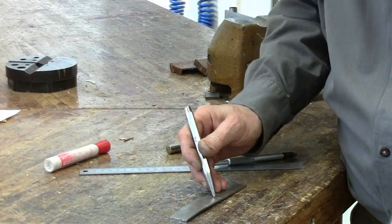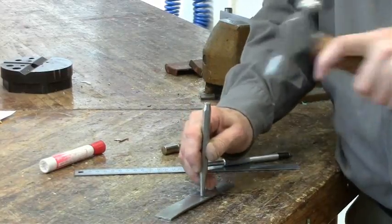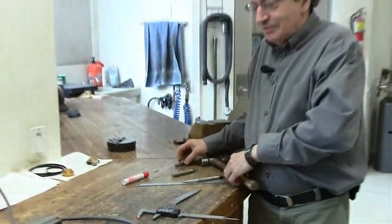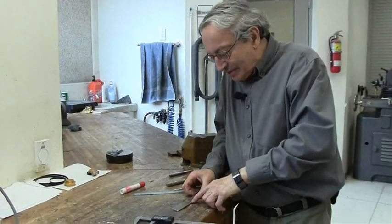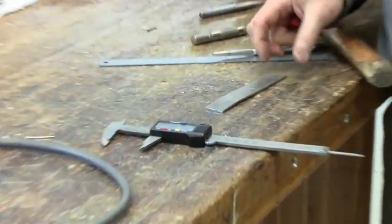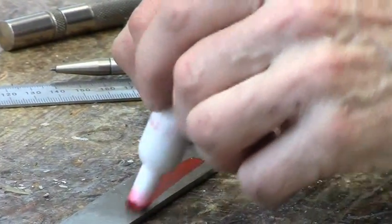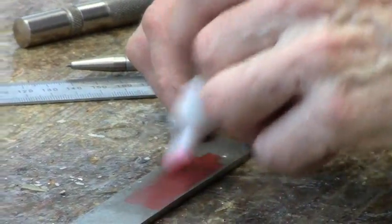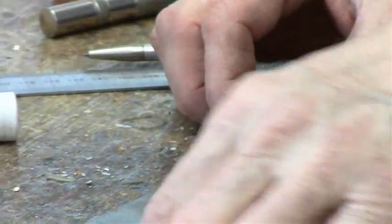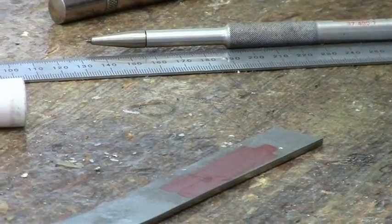Now sometimes if you don't see the lines well for orientation, what you can do is you can take erasable markers and just go over the area here. This is very convenient because if you go over the area you're working on with an erasable marker, you'll see the lines very well, and then you just wipe it off.